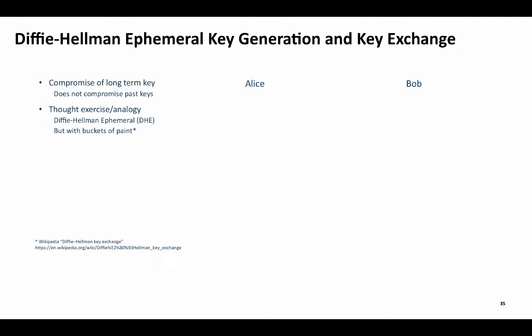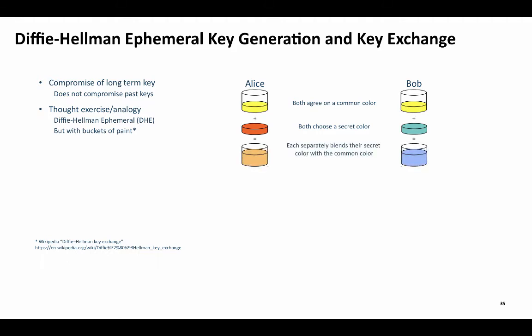Therefore, they need to come up with a common key for a symmetric cipher without an adversary figuring it out. Remember, this is a thought experiment. So instead of a common number, they each start with a common bucket of yellow paint, such that the two buckets are identical. Then they each separately choose a secret color, and they each independently mix their secret color with the common color.